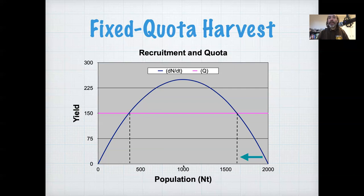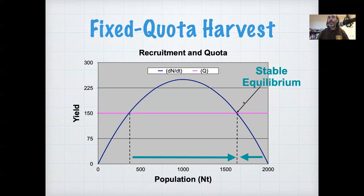If we start at half the carrying capacity, at 1,000, at that point the growth curve is higher than the quota. And so the population will tend to increase, and will tend to increase at any point between these two equilibria, because at all these points between the equilibria, the growth curve is higher than the quota, so it's higher than the harvest. So if that's true, then we have a prediction of a stable equilibrium up here at this upper equilibrium.